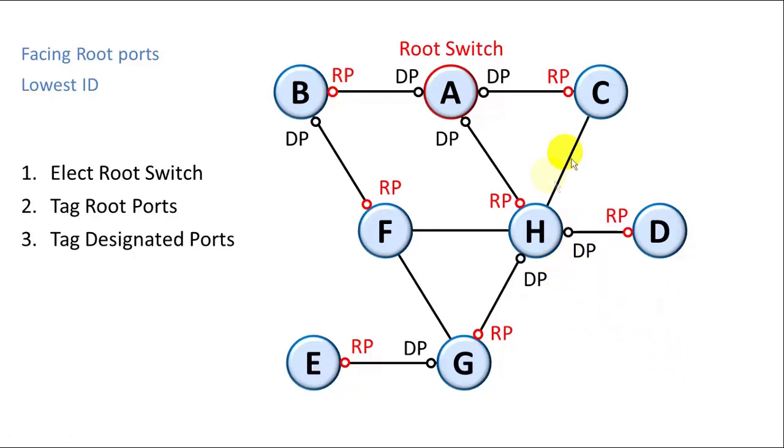Next, we have some remaining paths where we have neither root port nor designated port. So we see CH, FH, and FG. So in this case, we choose the one with the lowest ID and label it as a designated port.